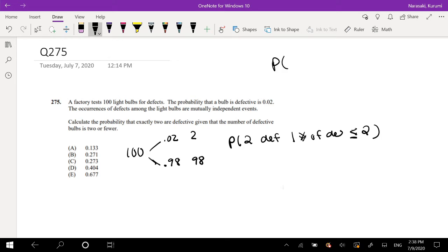As always, the conditional probability formula: A given B is equal to A and B divided by probability of B.